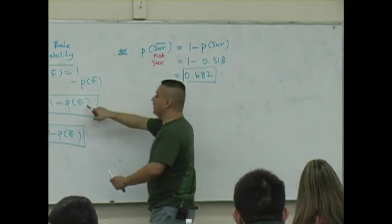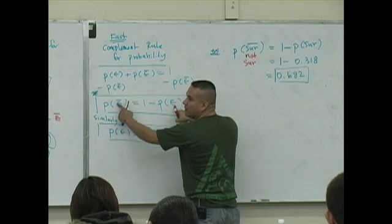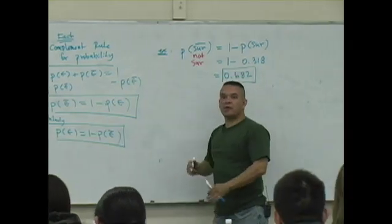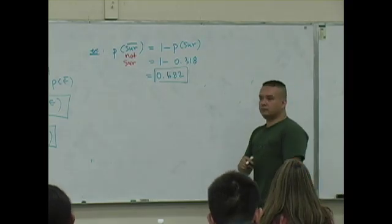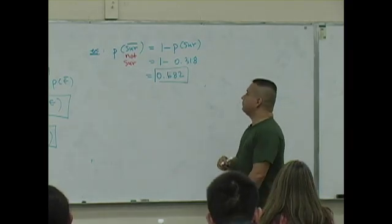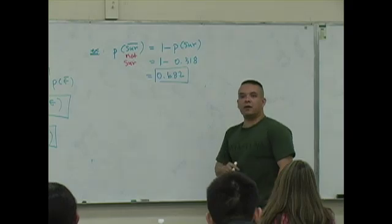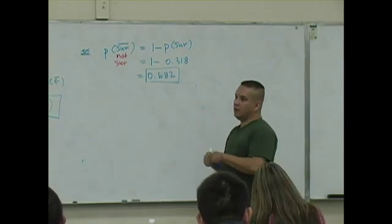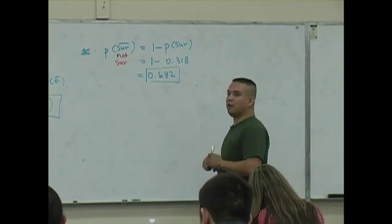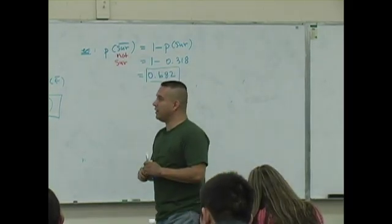This is not surviving. This is the complement of the event surviving. So the relationship between E and E complement, they're complements. These are complements of one another. You want to get used to using this formula, because it will help you with some of the things later on.